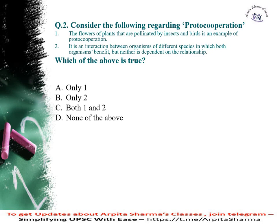Consider the following regarding protocorporation. First, the flowers of plants that are pollinated by insects and birds is an example of protocorporation. Second, it is an interaction between organisms of different species in which both organisms benefit but neither is dependent on the relationship. Which of the above is true?